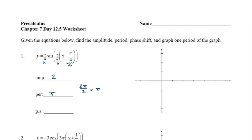The phase shift for this graph will be to the right π over 4. Remember, if on the inside of the function it says x minus π over 4, that's a shift to the right. If it's x plus π over 4, that would be a shift to the left. Now I have my three pieces of information, and I want to decide how to break up my x and y axes. The last of the four marks on my x-axis would be π — the end of my first period.